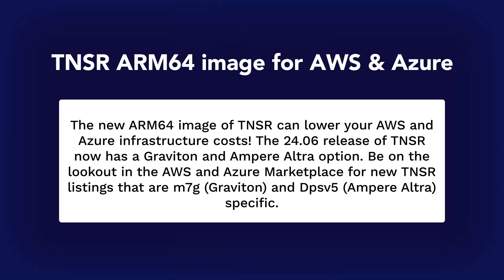With this release we're introducing a new ARM64 image of Tensor, which offers an opportunity to reduce your infrastructure costs. This release now supports both AWS Graviton and Microsoft Azure Ampere Altra options. Keep an eye on the AWS and Azure marketplaces for the new Tensor listings designed specifically for M7G Graviton and DPSv5 Ampere Altra instances.